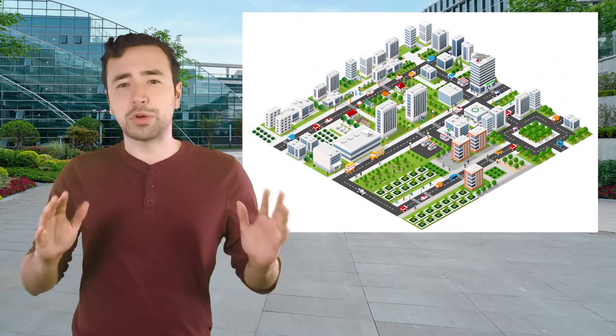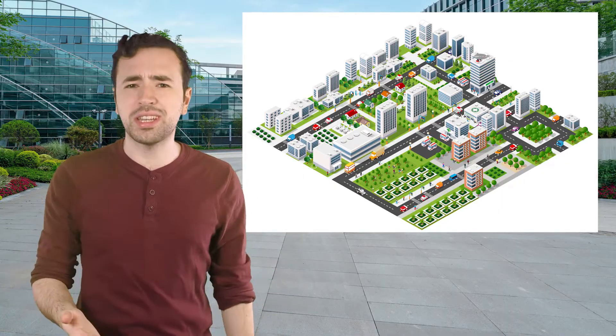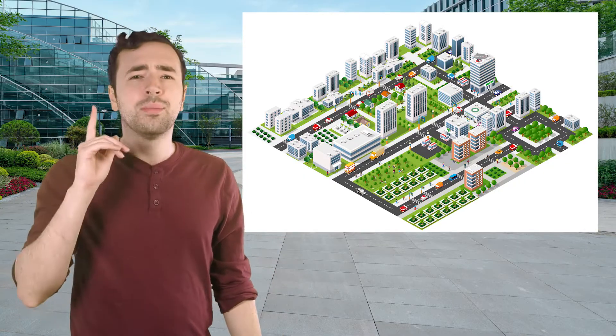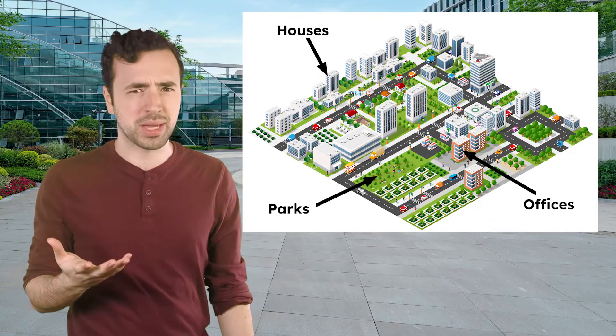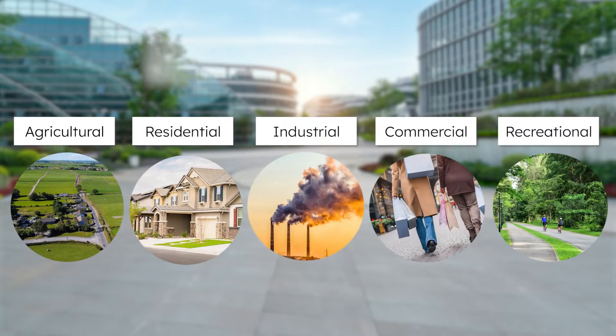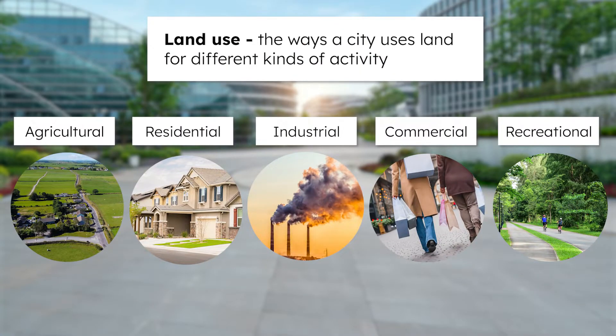Hey Explorers, it's Justin again. Remember, in this unit you're an urban planner in training designing your own dream city. Last lesson, you learned how to plan infrastructure, which connects your residents to essential services. But where are the houses, parks, and offices that are connected to this infrastructure going to be? Urban planners think about this when they plan land use — the ways that a city uses land for different kinds of activity.